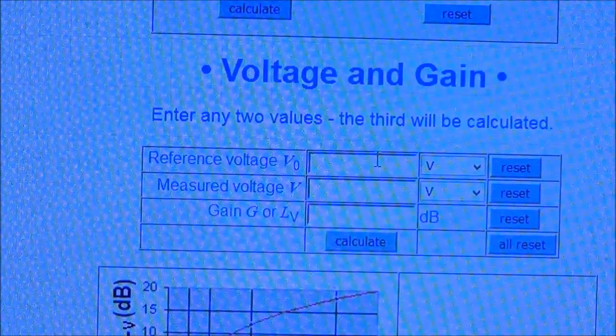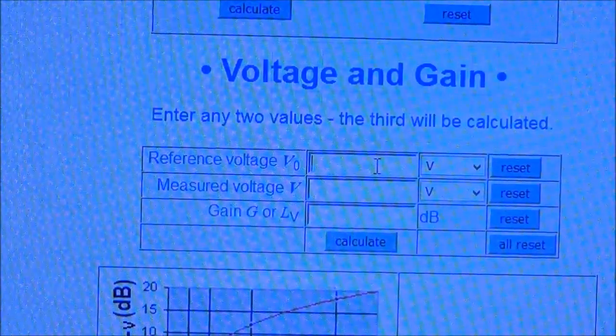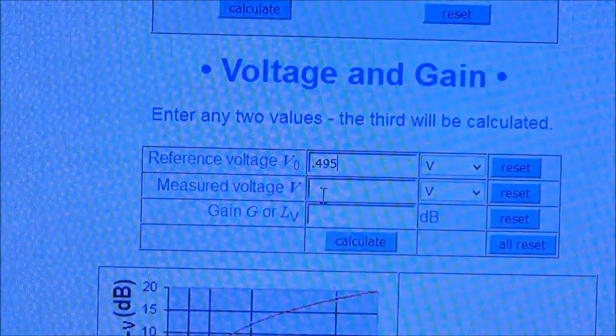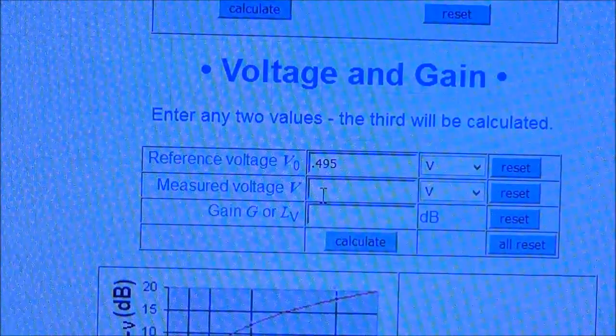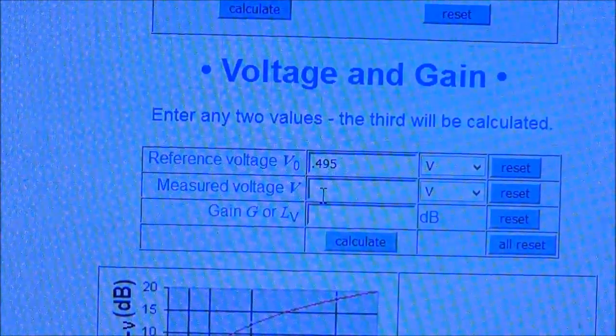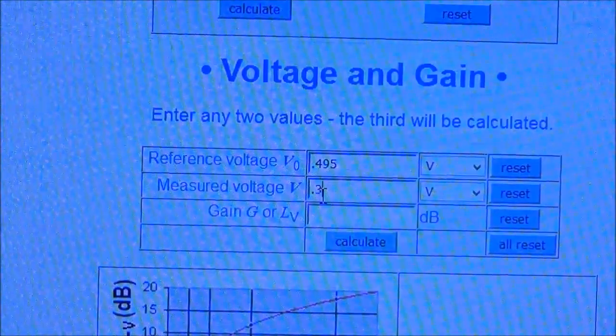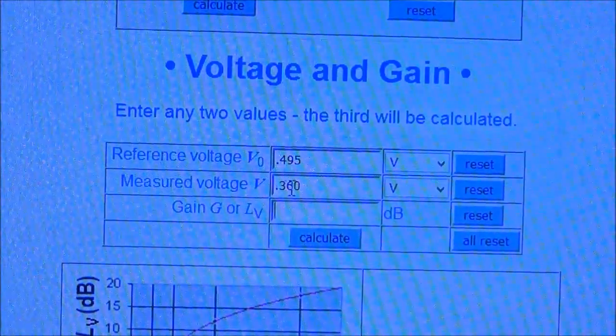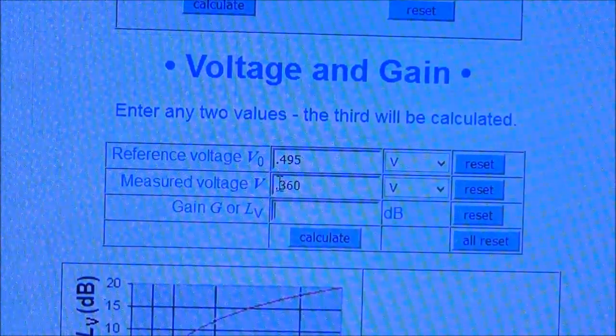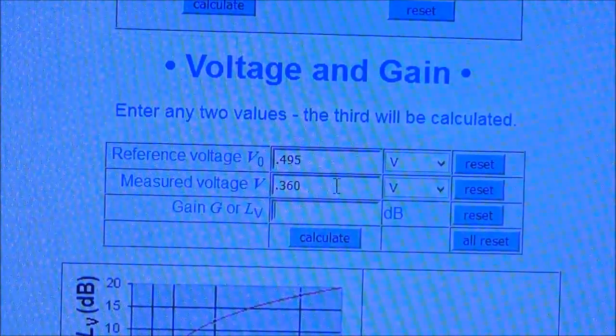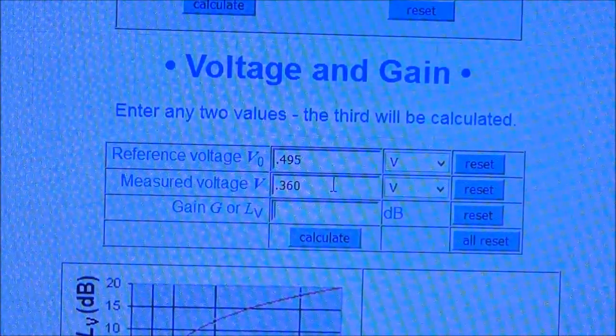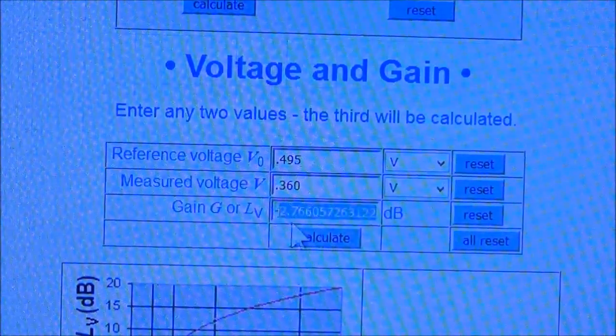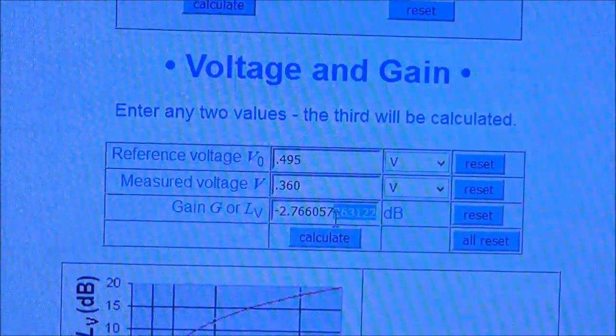So the 495, which was .495 volts, is the reference frequency. Now at 2000 hertz it was 360 millivolts, so that's .360. So we've got our voltages in here now, at .495 the reference at a thousand hertz and .360 the measured voltage at 2000 hertz. We know from looking at the RIAA curve we should get a drop. So all we have to do is hit the Calculate button. And here it says minus 2.76 dB.